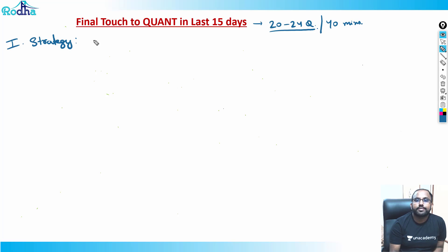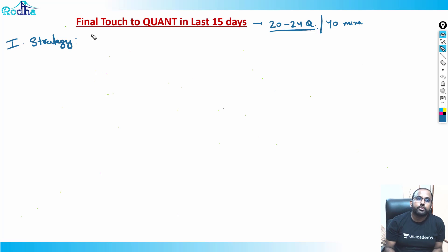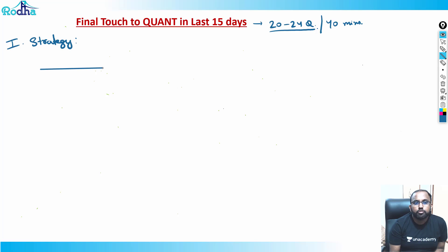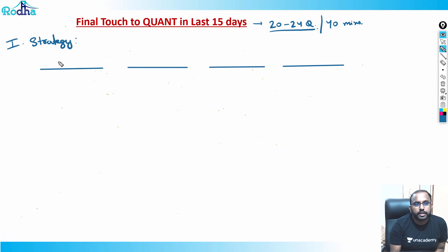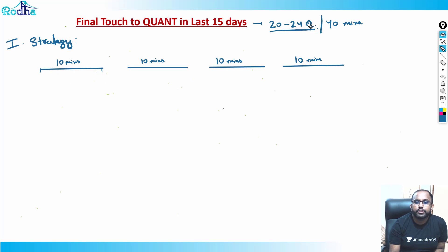The best strategy for this kind of exam — where the paper is short and you basically don't have much time to come back to questions — is to divide the paper into four slots of 10 minutes each. So divide the paper into four slots of 10 minutes each. If there are 24 questions, you're picking about six questions per slot.